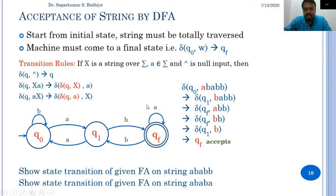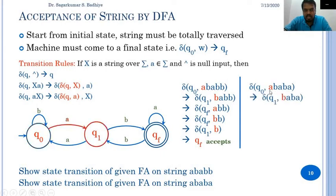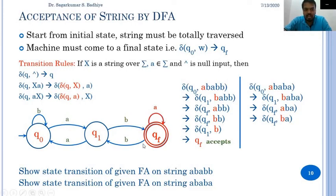Now consider another string a b a b a. Showing the transition on this string for the given finite automata, we start from the initial state and read the input one symbol at a time. In q0, the first input is a, so the automata changes state to q1 and moves the read head one step to the right, pointing to b. In q1, by reading b, the automata transits to qf. In qf, when a is the input, the automata transits to qf itself and moves one step right. In qf, when getting b, the automata changes state to q1, and in q1 when the automata gets a, it goes to state q0.